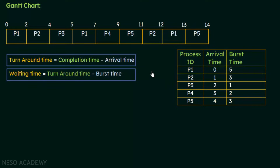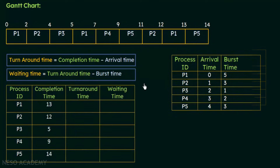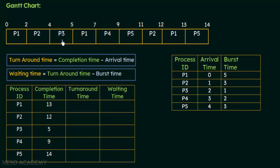Now let's fill in the table for processes p1 to p5, starting with completion times from the Gantt chart. For p1, the completion time is 13. For p2, the last occurrence is here, so the completion time is 12. For p3, it occurred first and last just here, so the completion time is 5 units.